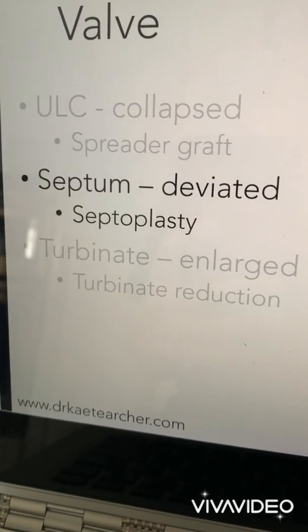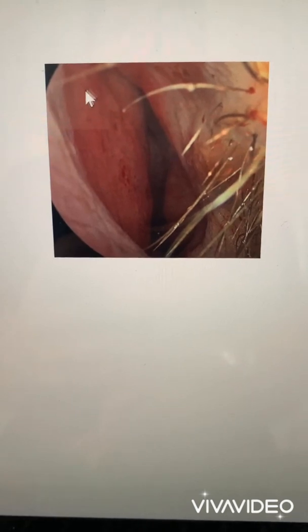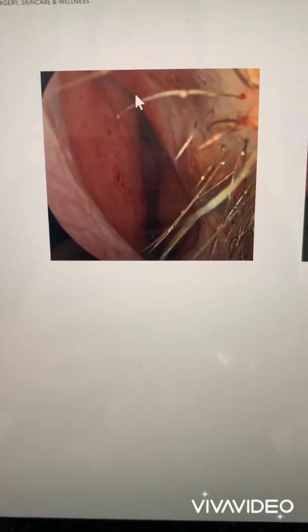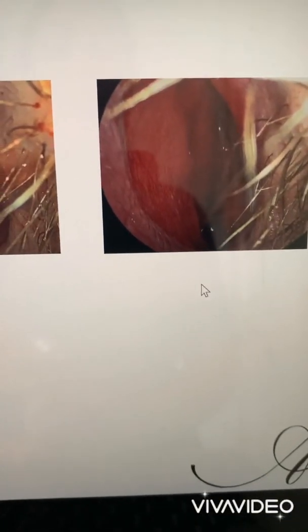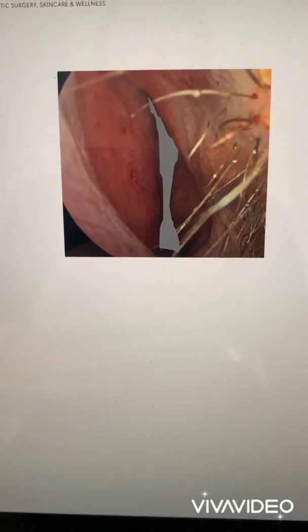Whenever the septum is the problem, we perform a septoplasty. Here you can see an endoscopic view into the left nasal cavity with this deviated caudal, or front part of the septum, pinching the internal nasal valve. We perform a septoplasty and that opens up the airway effectively, going from a breathing space like this to a breathing space like this.